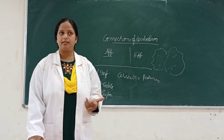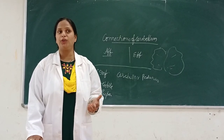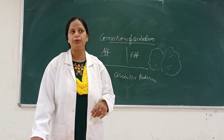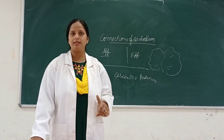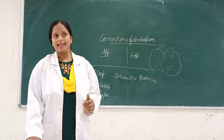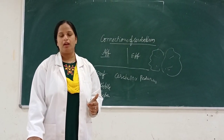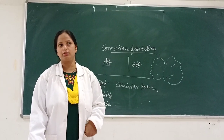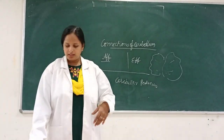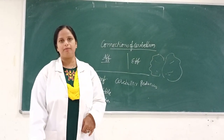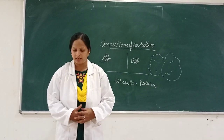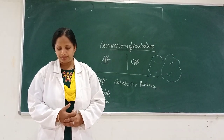When the cerebellum gets damaged or has lesions, we can see the following disorders. Hypotonia — decrease in muscle tone; atonia — complete loss of tone. Asthenia means weakness. Ataxia — the rate, range, and direction of movement are fragmented and not in a perfect manner. Disequilibrium — when equilibrium is not maintained. Past pointing or dysmetria — for example, in the finger-nose test a person with cerebellar lesion cannot touch the tip of the nose directly but moves hither and thither.